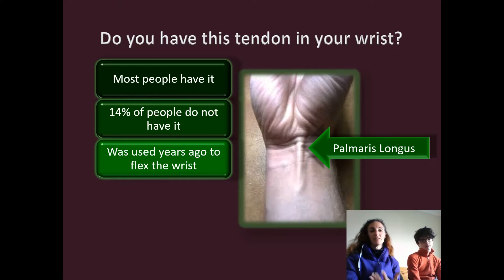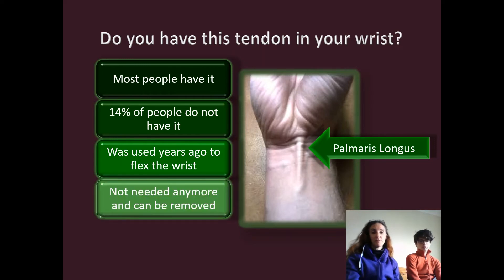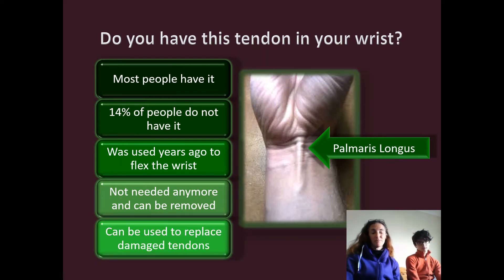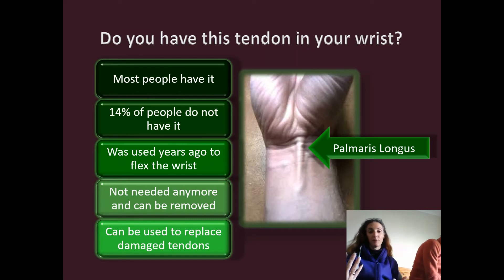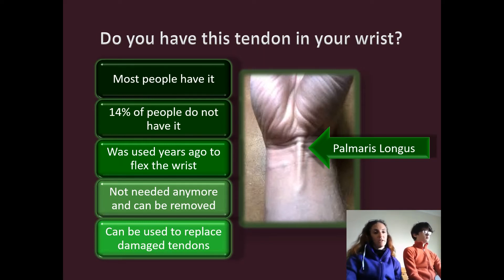About 20–30,000 years ago, this tendon was used to flex your wrist or bend your wrist forward and backwards. But as people evolved, it was no longer needed, and some people don't even have it anymore — they kind of evolved not to have one. And if you have one, if you damage a tendon anywhere else on your body, this can actually be removed and used to replace your damaged tendons.